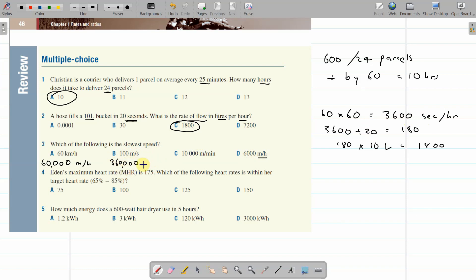It's looking like it's going to be that one. 10,000 metres per minute. That is already faster than that one in the minute. How many per hour is times 60. So 10,000 times 60 is 600,000.